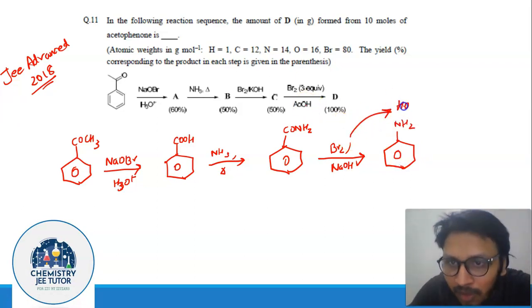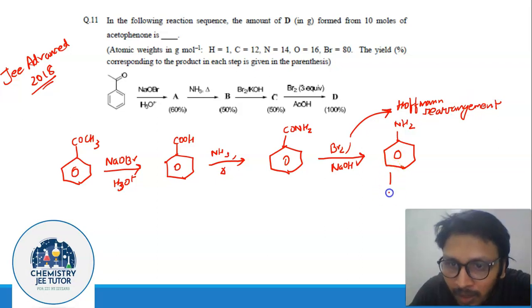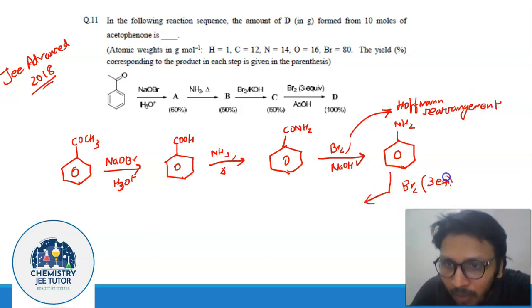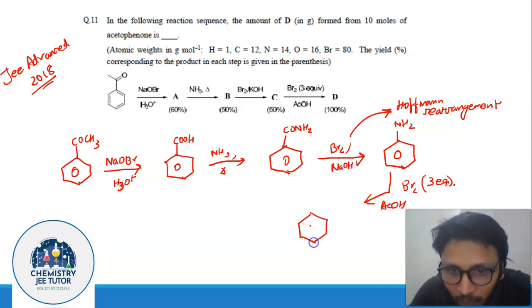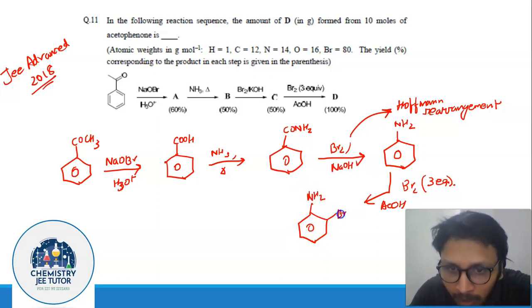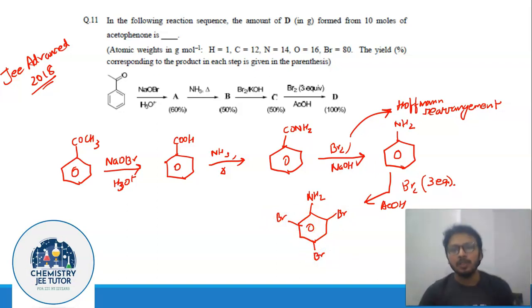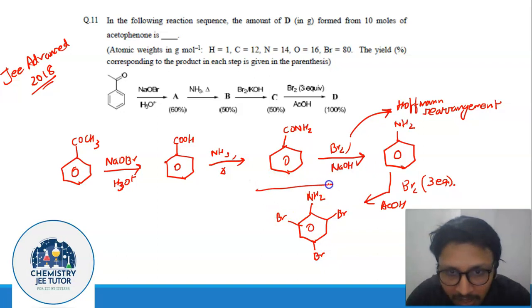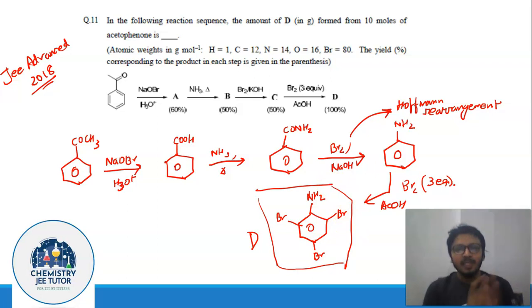Then we have bromine and KOH. You know very well what it does — it converts the amide to an amine. This step is called the Hofmann rearrangement, which is a very easy and important rearrangement. Then we give three equivalents of bromine — that is excess bromine — in the presence of H₂O. It creates a tribrominated product around the aniline: bromine at the two ortho positions and the one para position. This is our final product D.